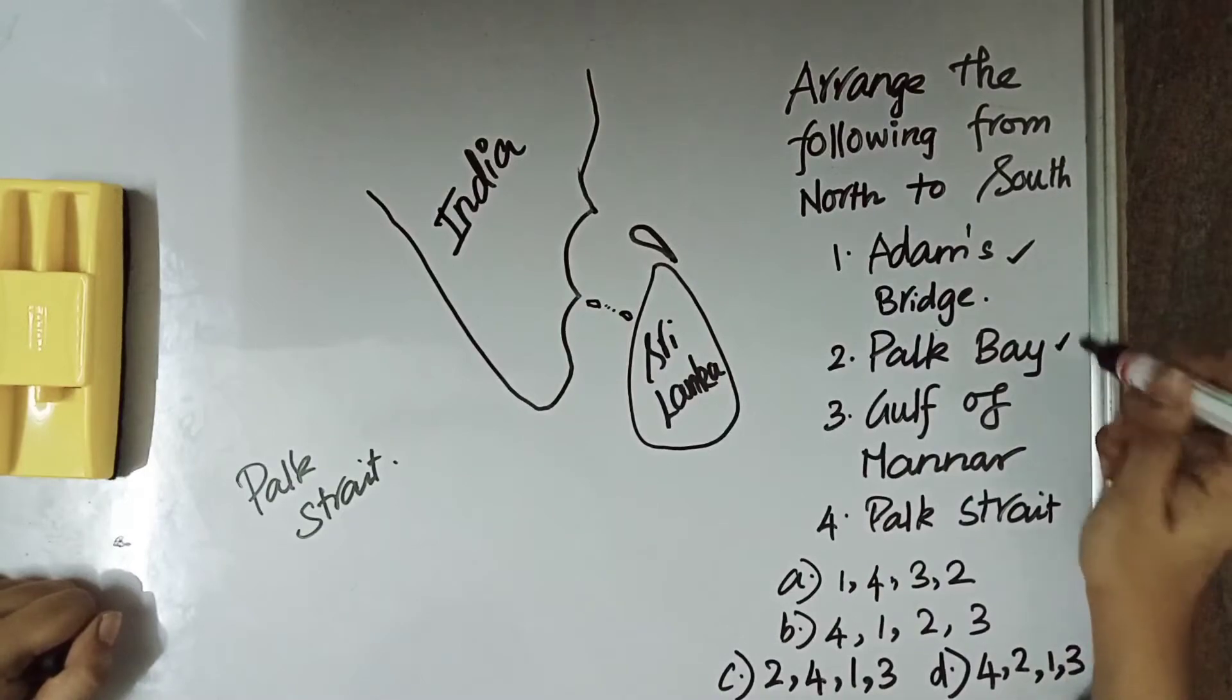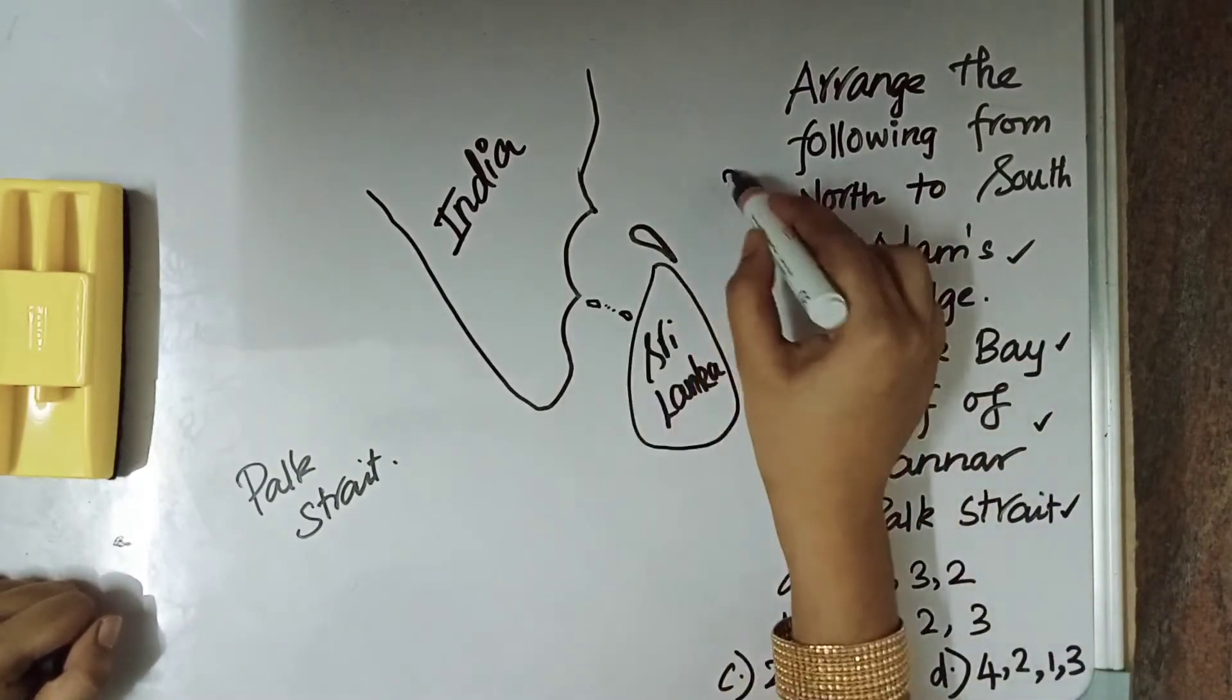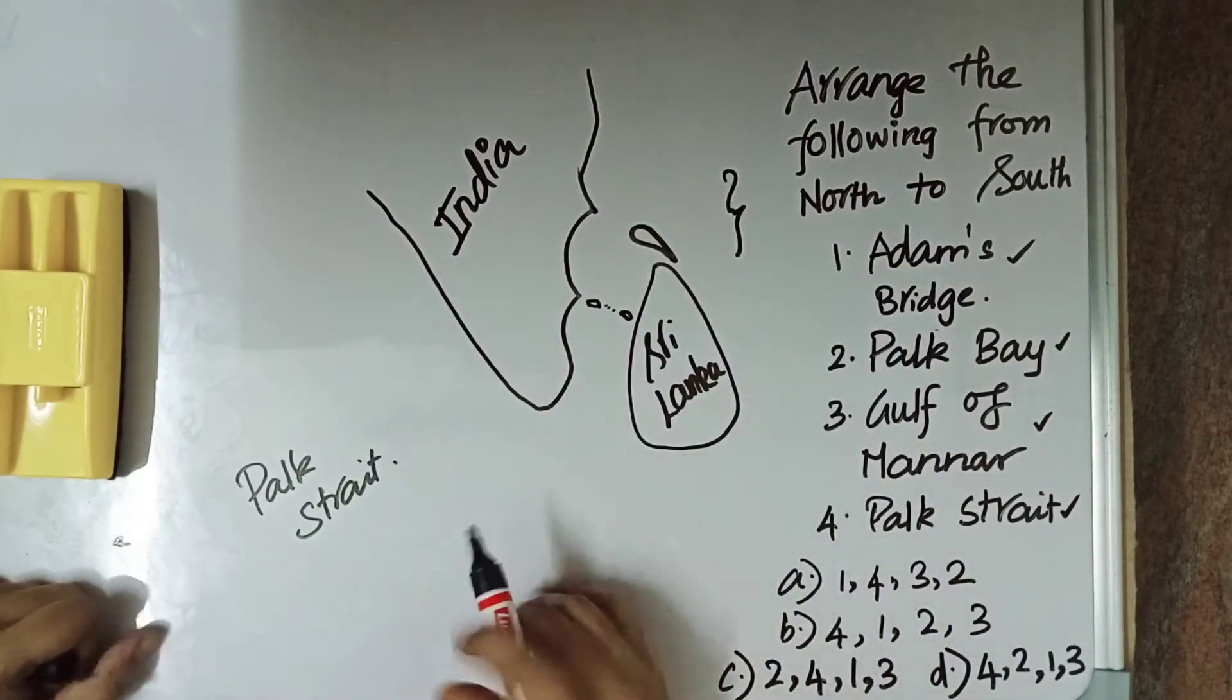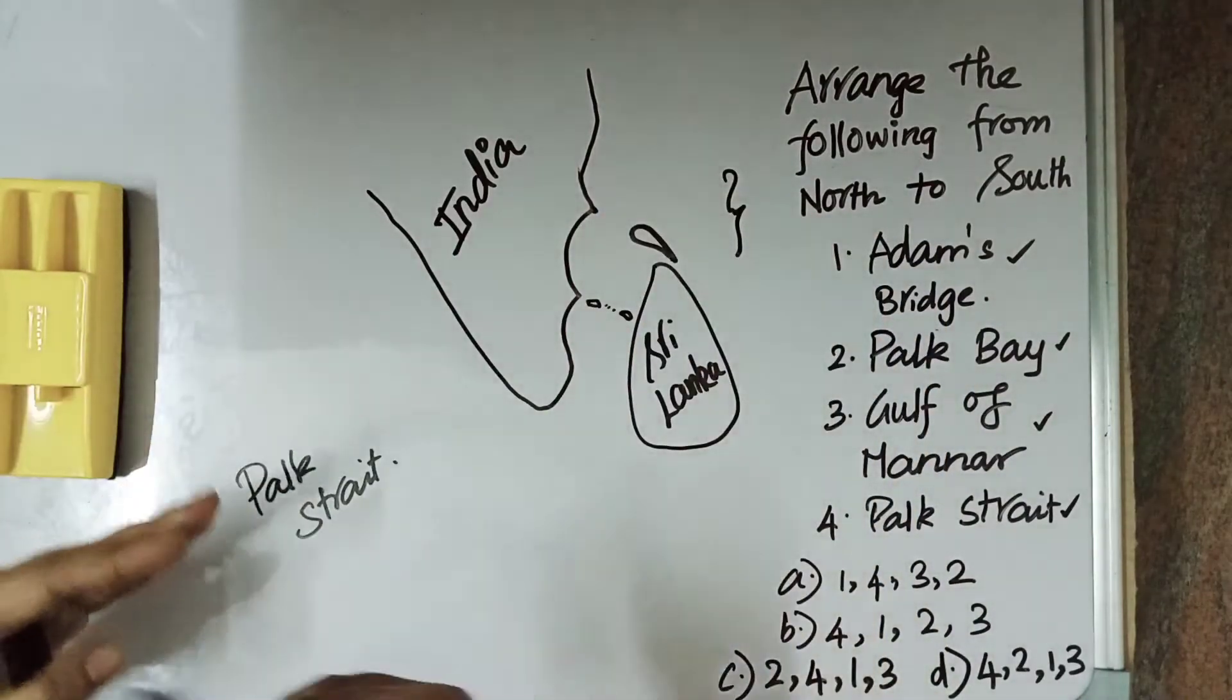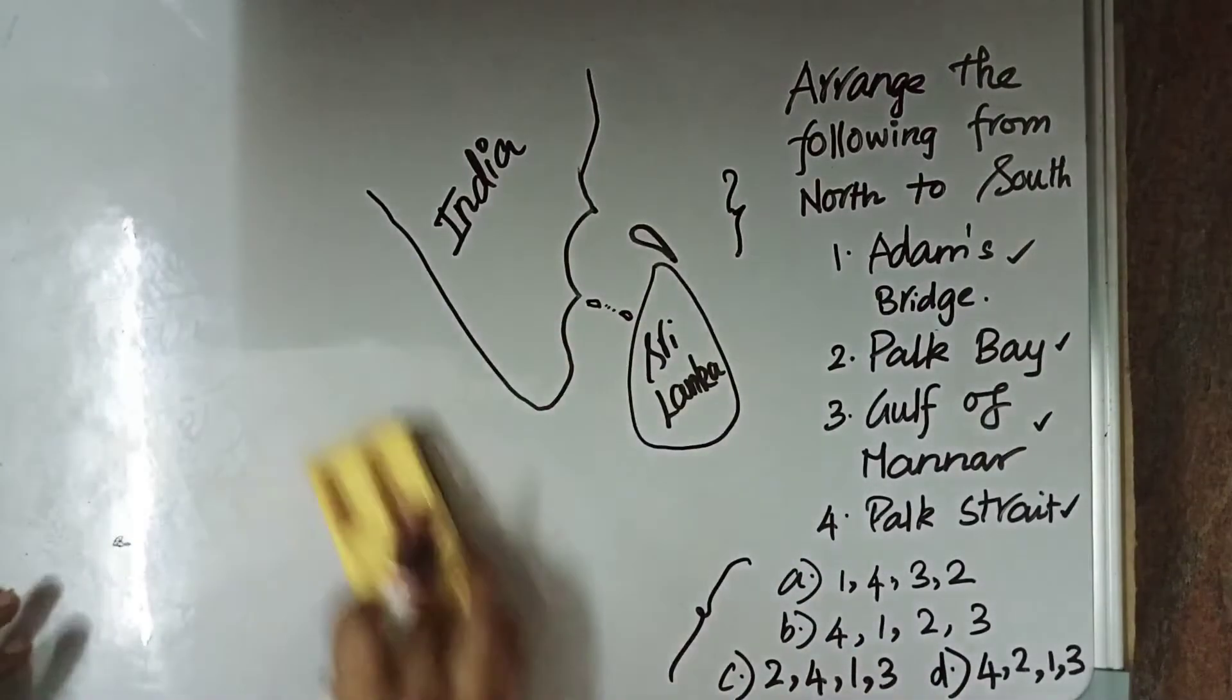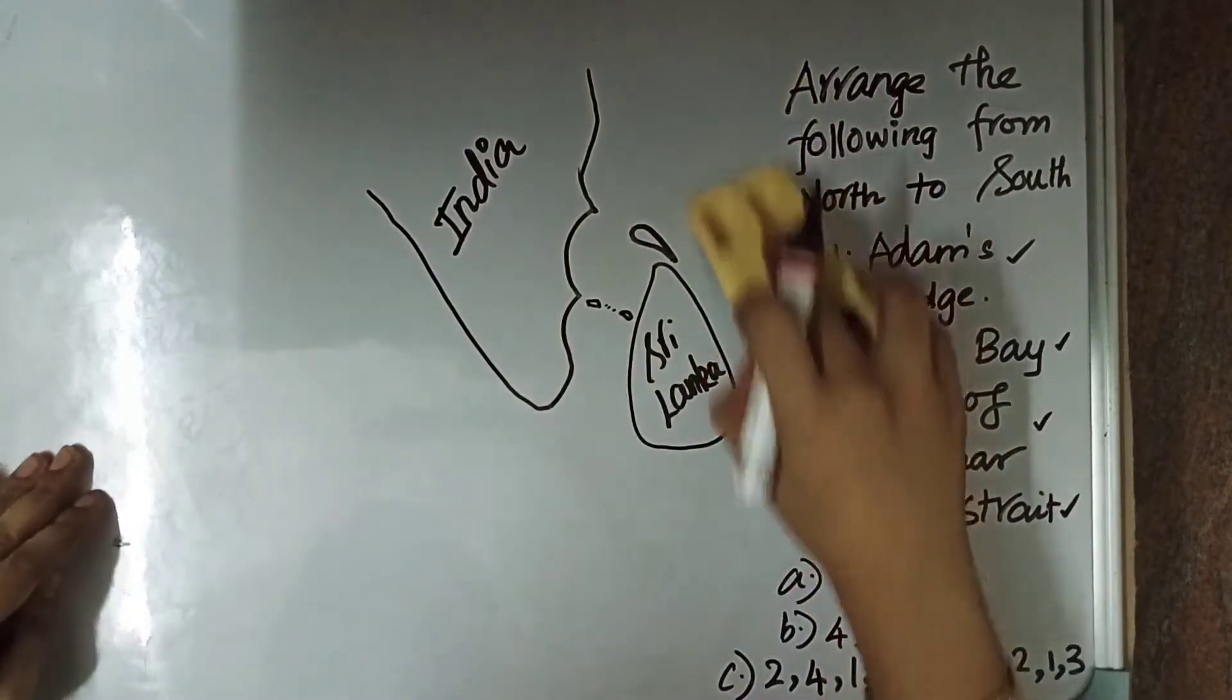One is Adams Bridge, Park Bay, Gulf of Mannar, Park Strait. All these four are located in this region only, but you should arrange them from north to south. So, these are the options. Let us see which one is in the north and the answer for this.